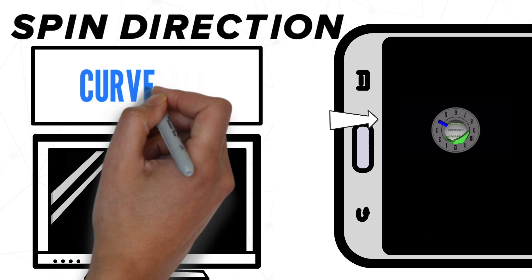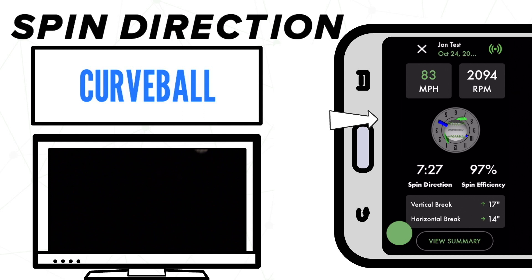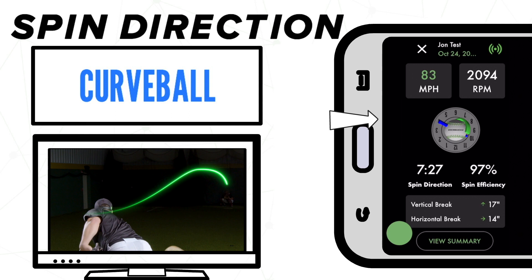If we look at a video of the same pitcher's curveball, you'll notice that this pitch has the top of the ball spinning away from us. That means the spin direction is going to fall on the opposite side of the clock than the fastball we just looked at. This is what gives curveballs that nasty downwards bite that we're so used to seeing.